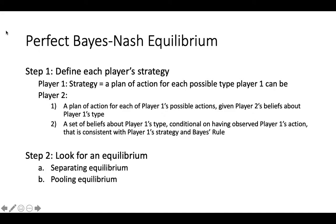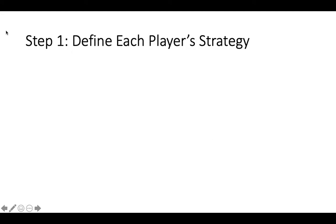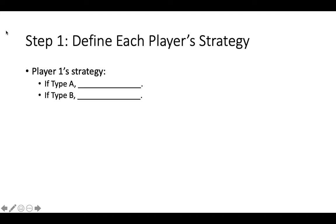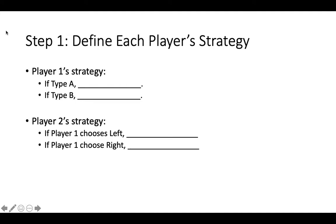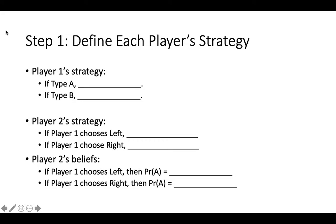Step 2 of solving signaling games is to look for an equilibrium. There are two main types of equilibria in a signaling game: a separating equilibrium and a pooling equilibrium. We will start solving the game we've set up by defining what each player's strategy should look like. Player 1's strategy must include an action for each possible type that nature could choose for them. Player 2's strategy must have two parts: a plan of action for each of player 1's possible actions, and beliefs about the probability that player 1 is type A or type B, which depend on whether player 2 observes player 1 playing right or left.